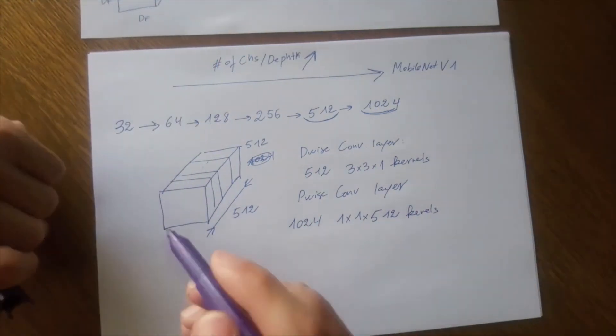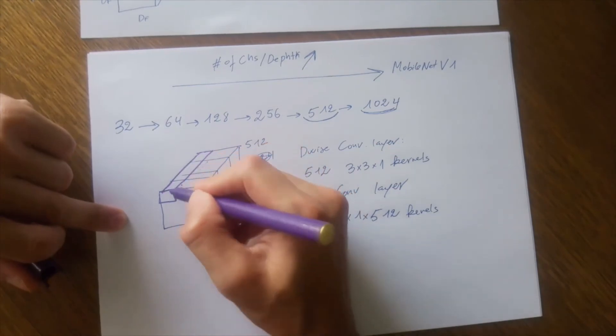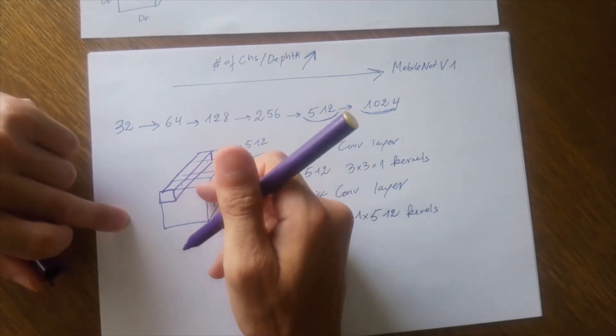Because remember, one by one kernel should span over the entire depth of the data.